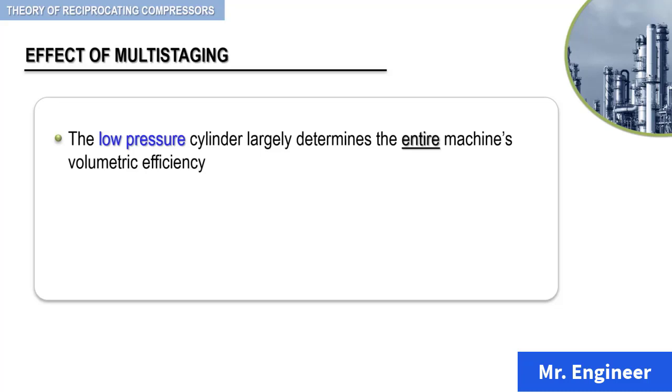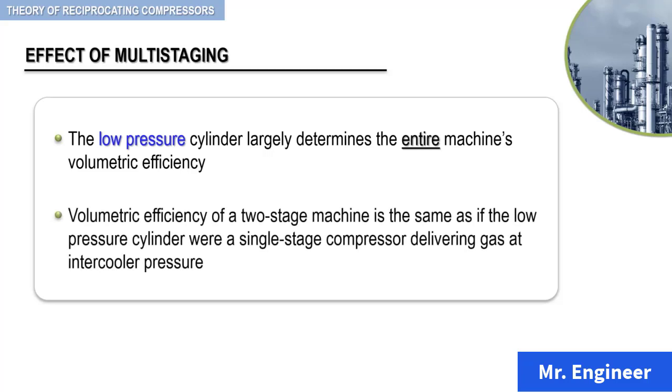In other words, volumetric efficiency of a two-stage machine is the same as if the low-pressure cylinder were a single-stage compressor delivering gas at intercooler pressure. In a reciprocating compressor, all cylinders are commonly combined into one unit assembly and driven from a single crankshaft. We will see this in detail in the Mechanical Design section further ahead.